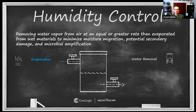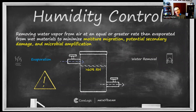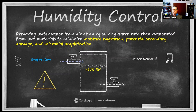Once the humidity level becomes high enough, we run into the problems we defined — potential secondary damage, microbial amplification. Once we hit approximately 60% relative humidity, that's the industry rule of thumb, although it's not precise. We start to become concerned about moisture migration, potential secondary damage, and mold growth.